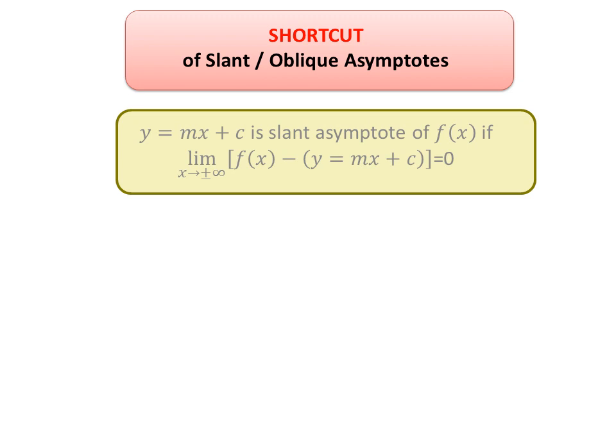I am going to show you the shortcut to find the slant asymptote of any curve. The definition of the slant asymptote is y = mx + c, the slant asymptote to a function f(x) if the following condition is satisfied. So what's the shortcut? We have to only find m and c, then we can plug them into the equation y = mx + c so that becomes a slant asymptote.